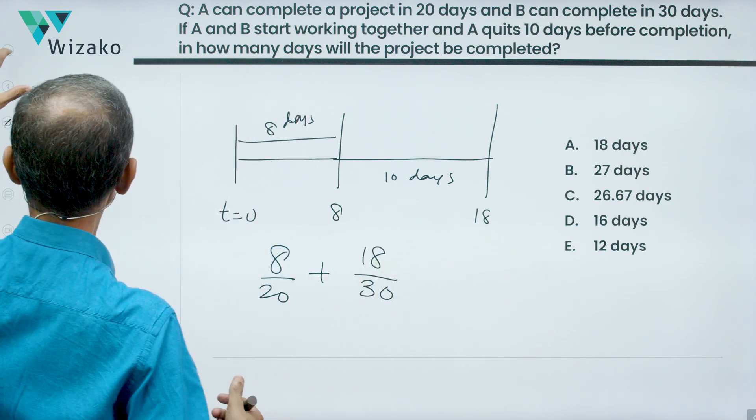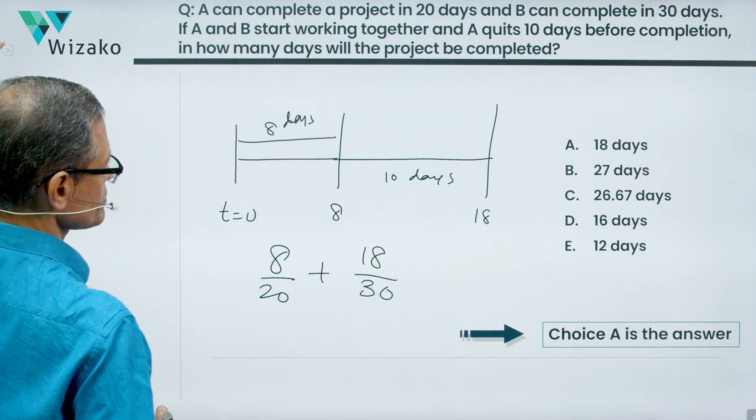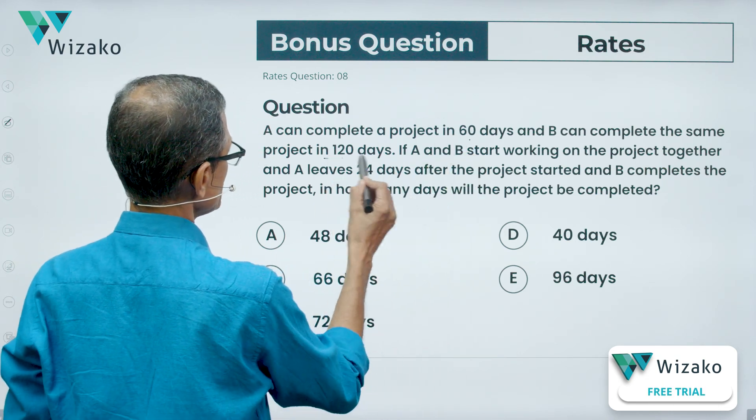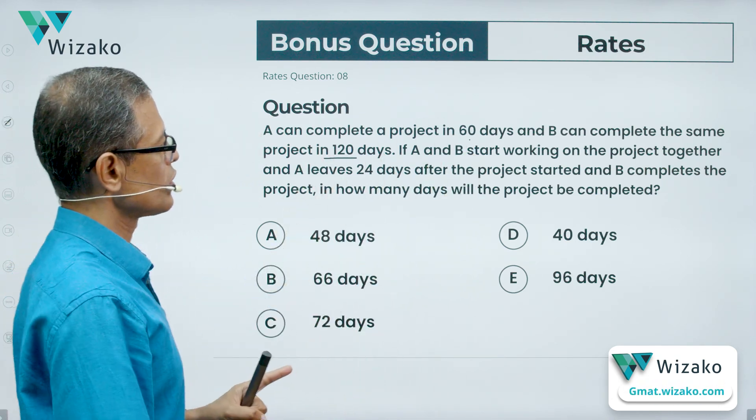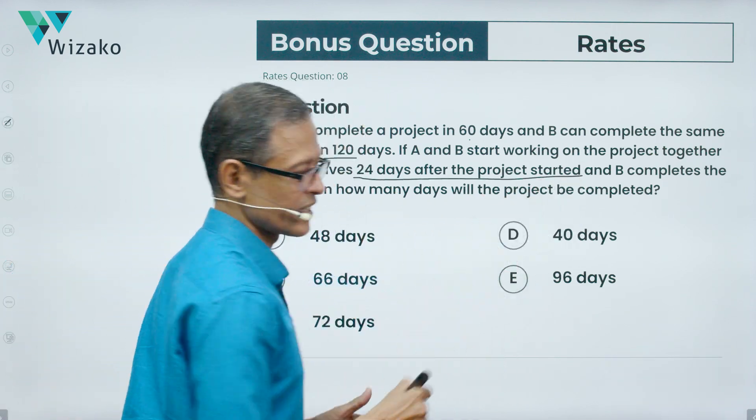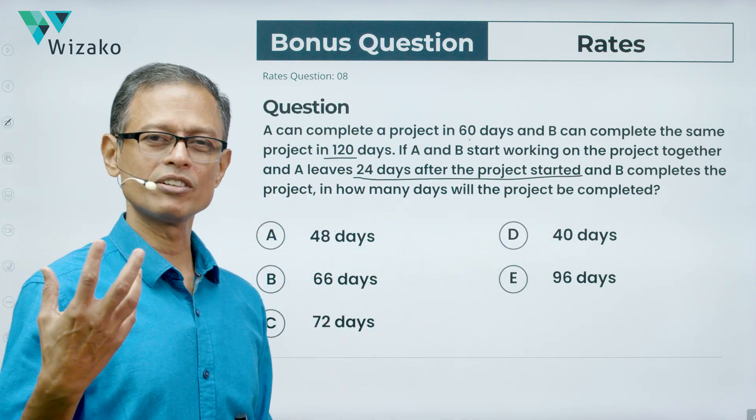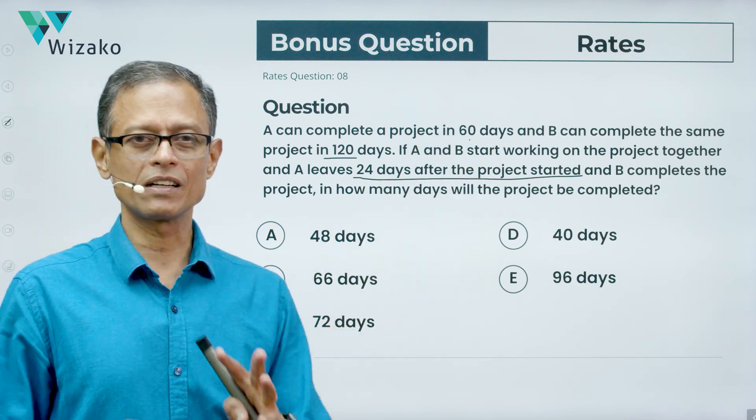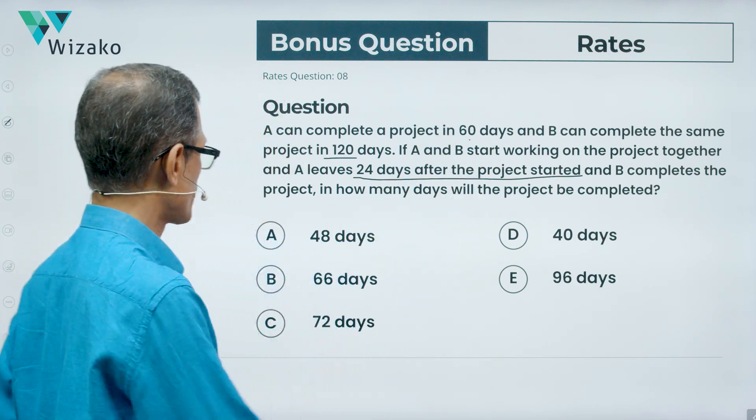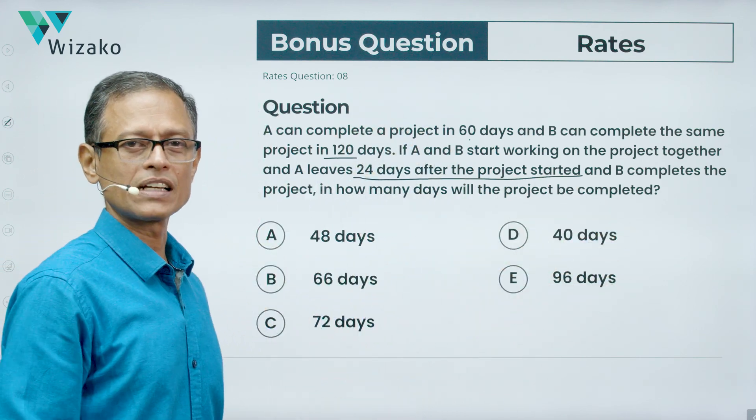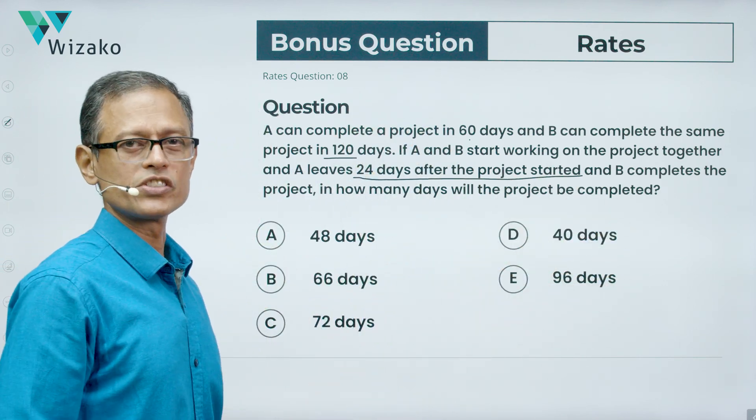As I said, here is your bonus question. A can complete a project in 60 days and B can complete it in 120 days. A and B start working on the project together and A leaves 24 days after the project started. So much more straightforward inference. And B completes the project. In how many days will it be completed is what the question is. I've got these as the answer options for you. Solve it and post your answers to the comment section of this video. Best wishes for your GMAT preparation.